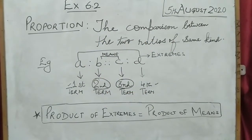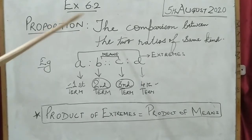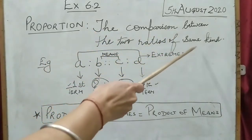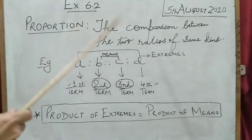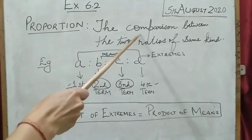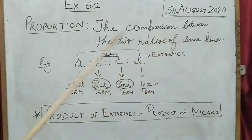Good morning everyone, welcome back to your online class. In our last video we discussed ratio — ratio is the relationship of two things of the same kind. Today our topic is proportion. You can see in your books exercise 6.2: proportion. Proportion is the comparison between two ratios of the same kind. In ratio it was 'relationship'; here it is 'comparison between two ratios of the same kind.'